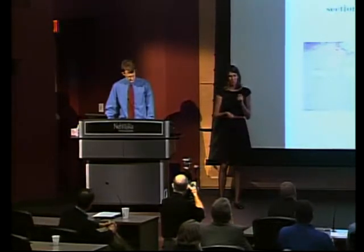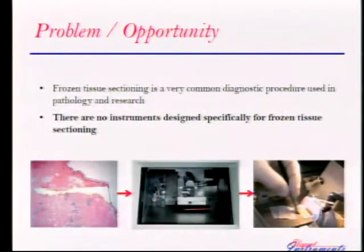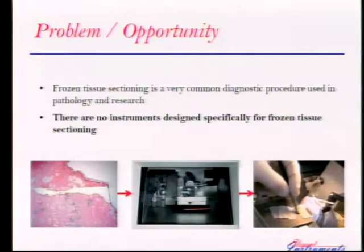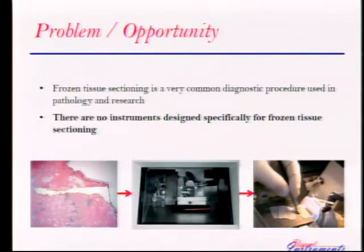Today we will tell you about our first instrument which we designed and developed for frozen tissue sectioning. Frozen sectioning is a diagnostic procedure. One example of when it's used is during cancer surgery. A surgeon takes a small piece of tissue from a patient, freezes it, and sections it very thinly. Those very thin sections are put on a microscope slide and observed to see if any cancer cells remain. A cancer tumor can regrow from one cell, so it's very important.